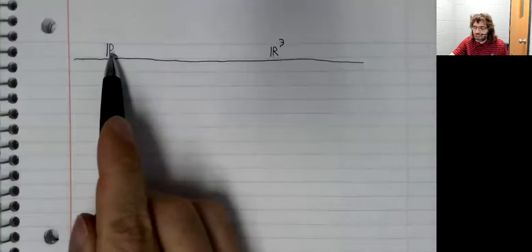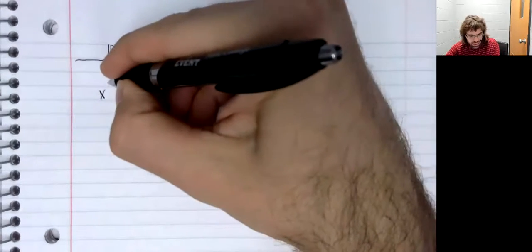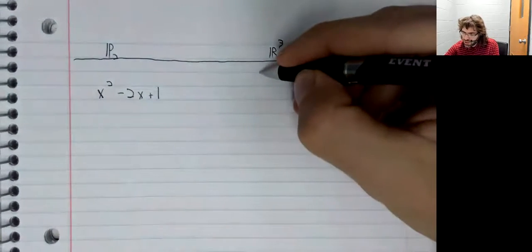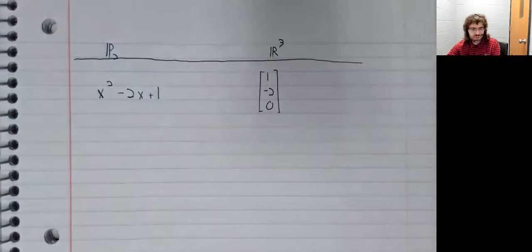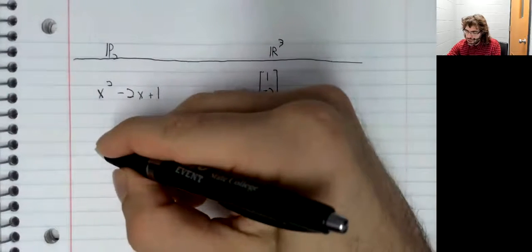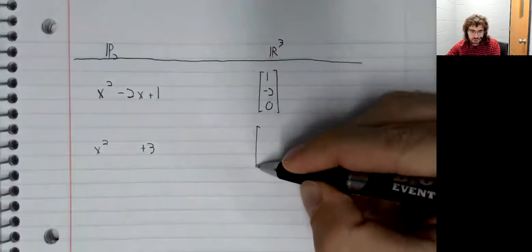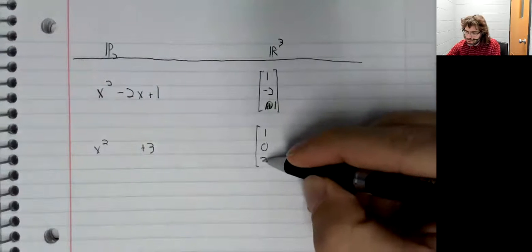We've got two vector spaces that are indistinguishable from a vector space point of view. And we've got three vectors. We've got x squared minus two x plus one, and its image over here: one, negative two, zero. We've got x squared plus three, and its image over here: one, zero, three.